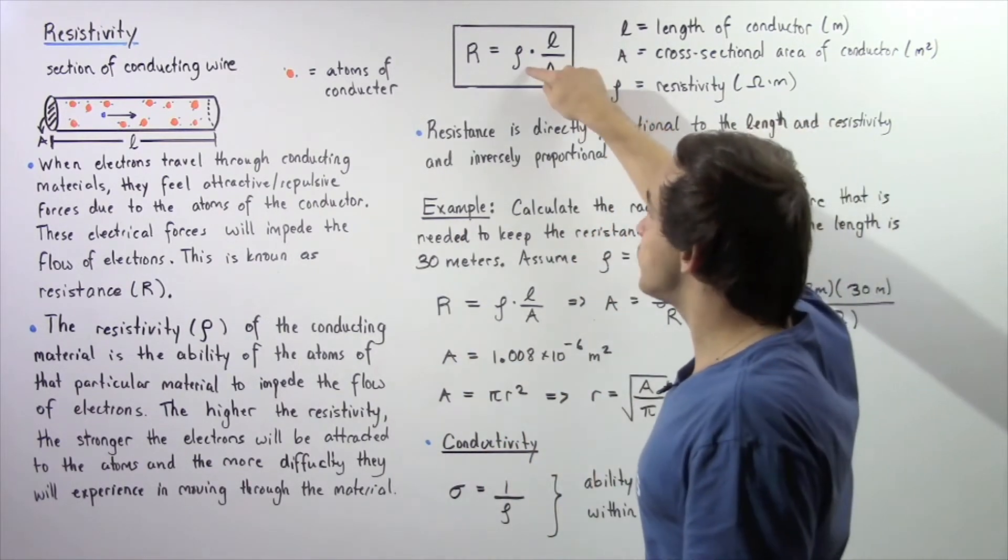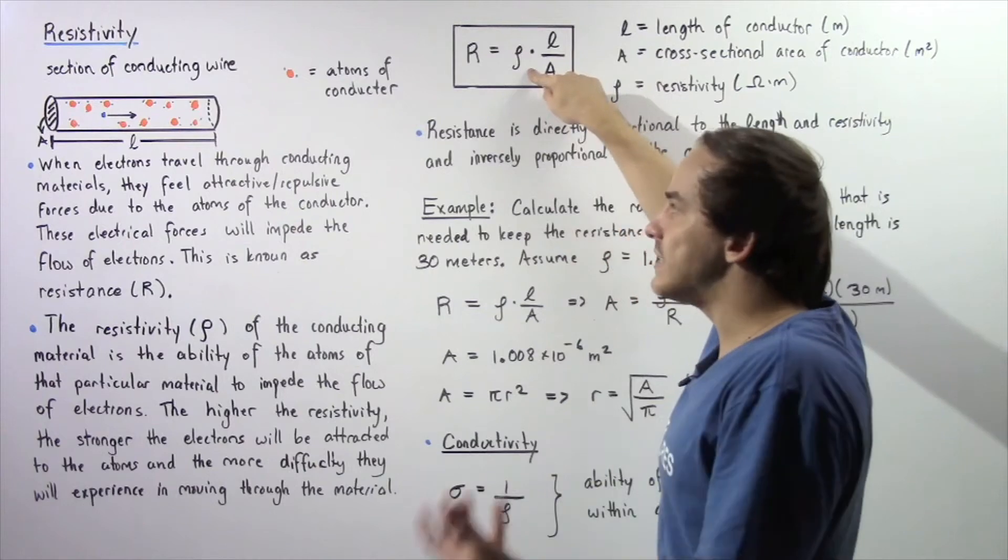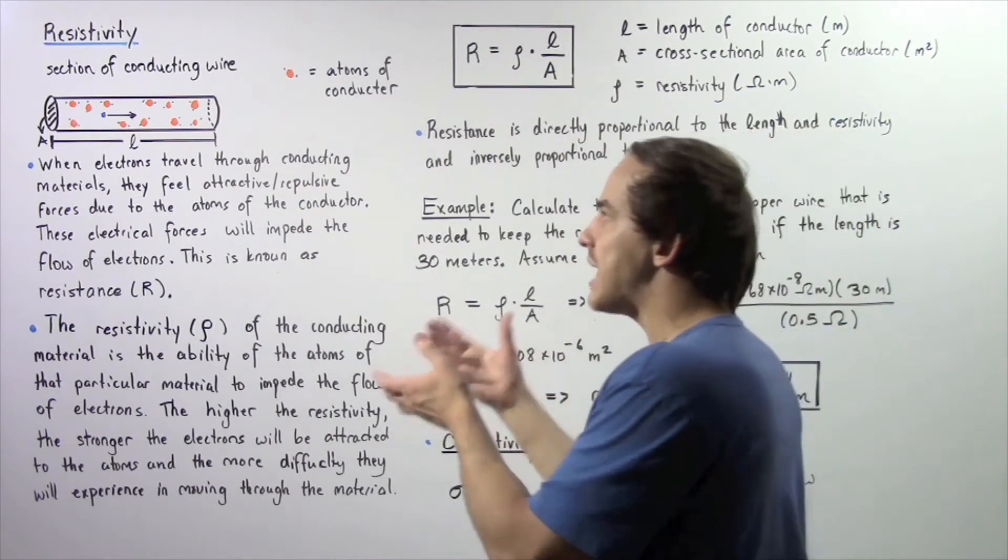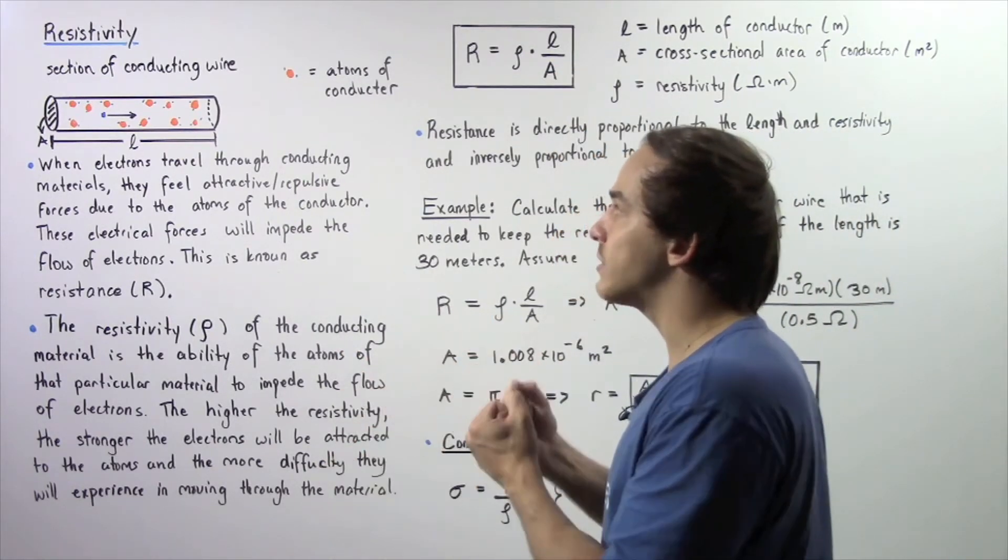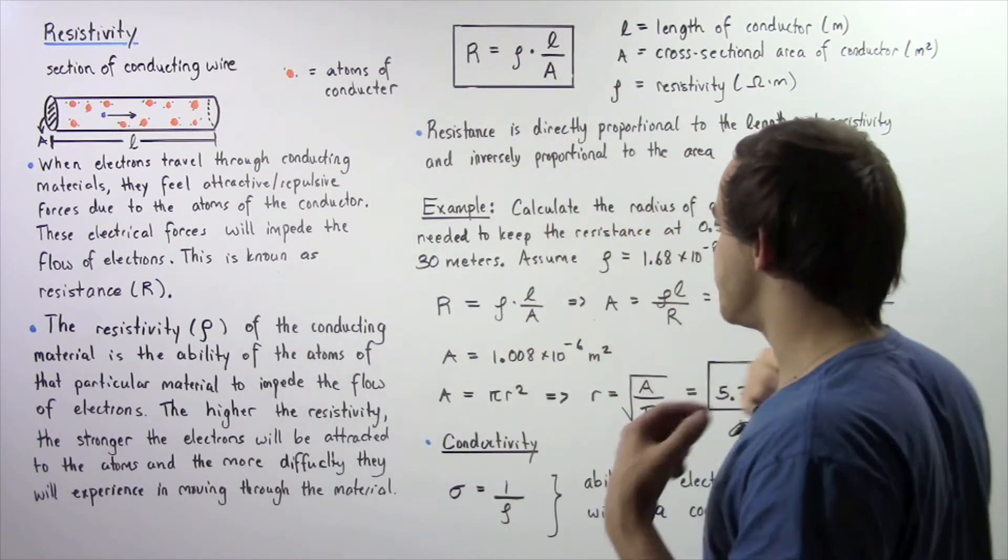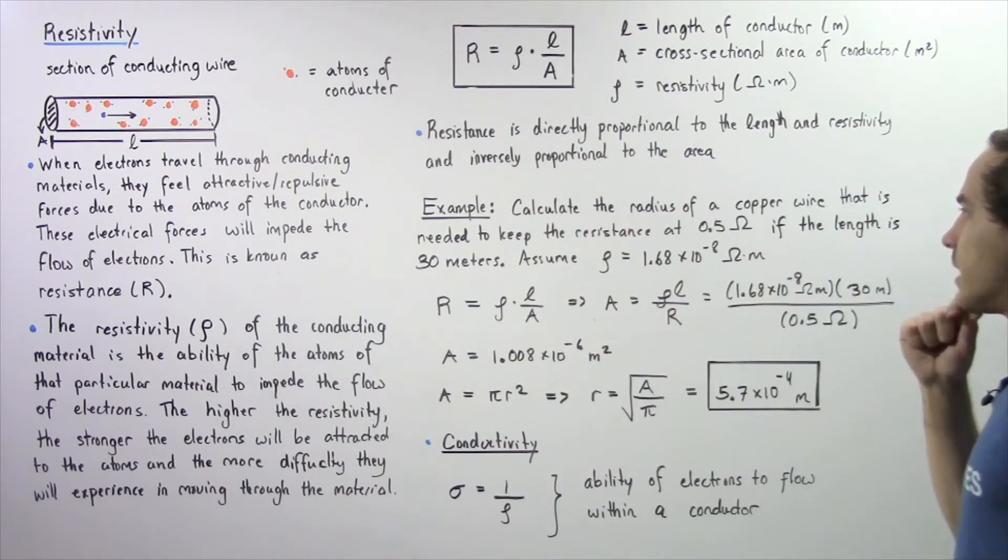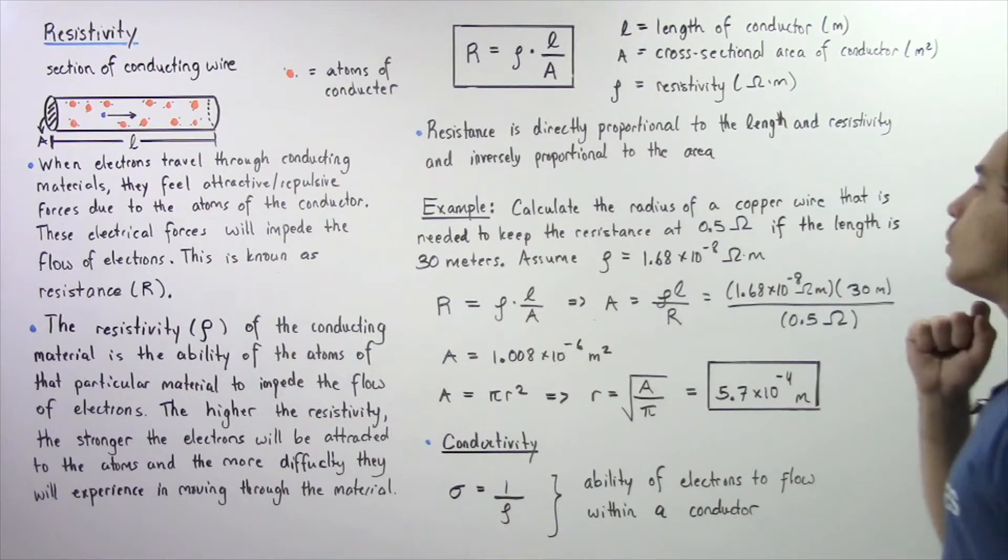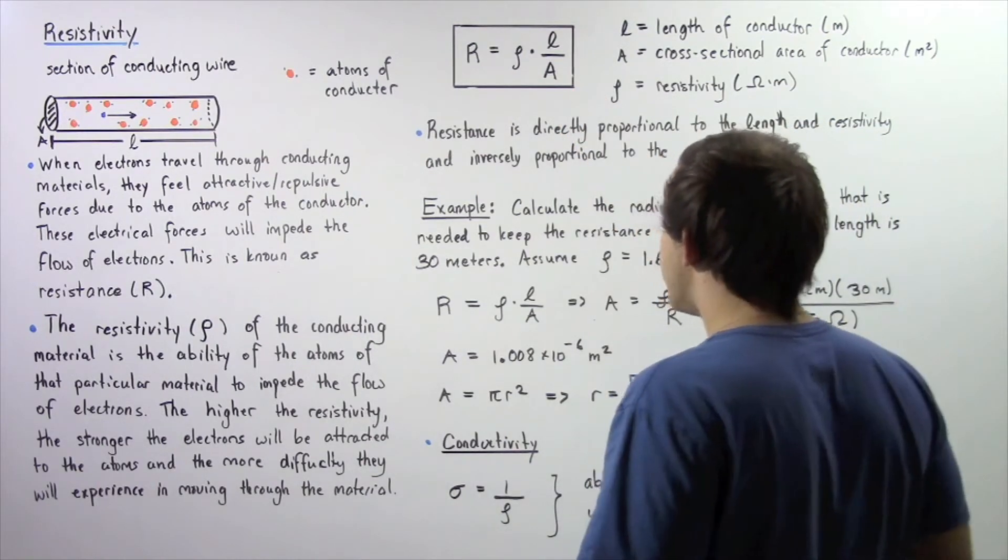If we increase our resistivity, we essentially increase the ability of those atoms of the material to attract that electron and so our resistance will increase. Let's look at the following example in which we're going to apply this equation.